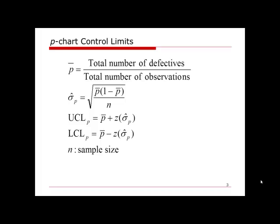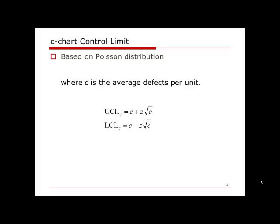For the c-chart, it is based on Poisson distribution. The only number that matters is c, which is the average defects per unit.